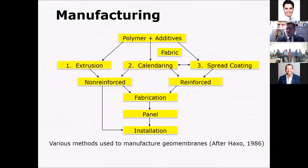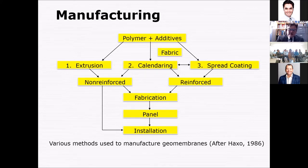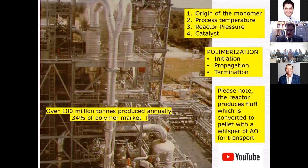I love this flow diagram by a dear friend, Henry Haxo, back in the 80s. Manufacturing of geomembranes leads down one of three paths. The path we're most interested in is extrusion on the left-hand side: from the polymer to the extrusion to non-reinforced fabrication panel and then installation. That's the avenue we're going on.